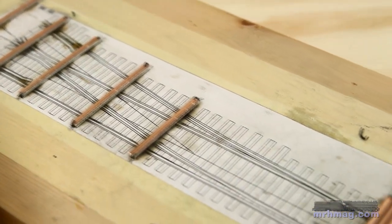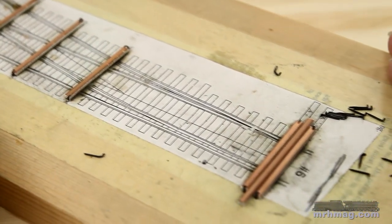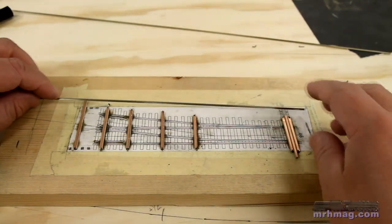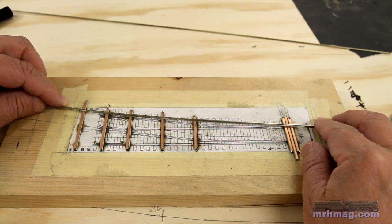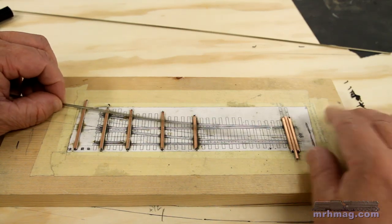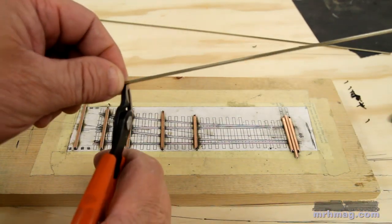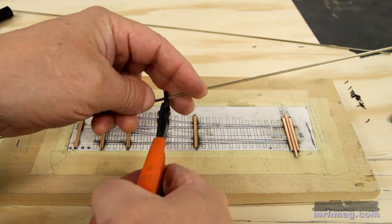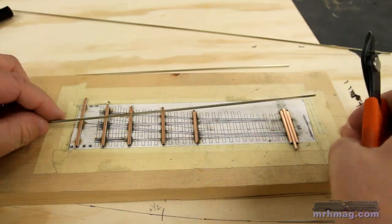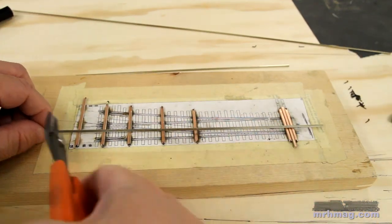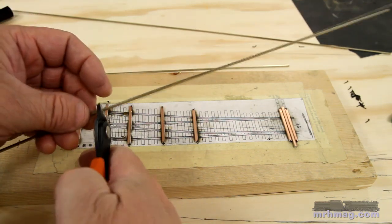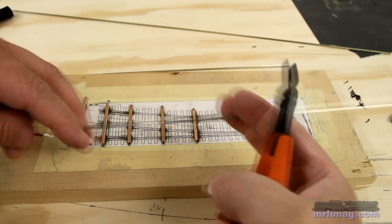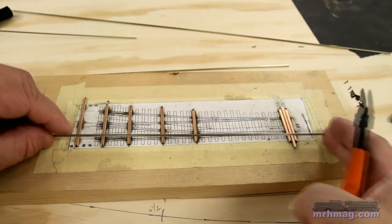The spikes slip over the ends of the PC ties like this. With the ties secured in place, it's time to start adding the rails. Before continuing, be sure to file the ends of the rails smooth. Burrs will be a problem. They can cause derailments and will make it much more difficult to slip on rail joiners.